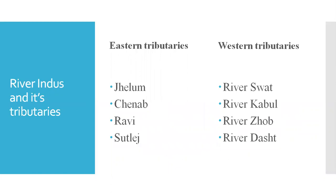A tributary is actually a small branch of a river that dumps into a larger one. River Indus has eastern tributaries and western tributaries. The eastern tributaries include Jehlam, Chenab, Ravi, and Satlaj. Whereas the western tributaries include River Swat, River Kabul, River Zob, and River Dasht.